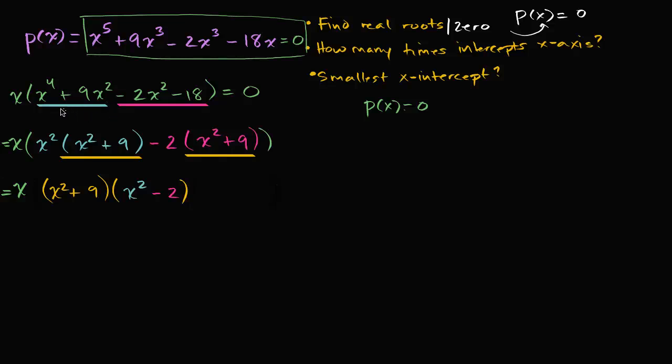In the last video, we factored this polynomial to find the real roots. We factored it by grouping, which is essentially doing the distributive property in reverse twice.